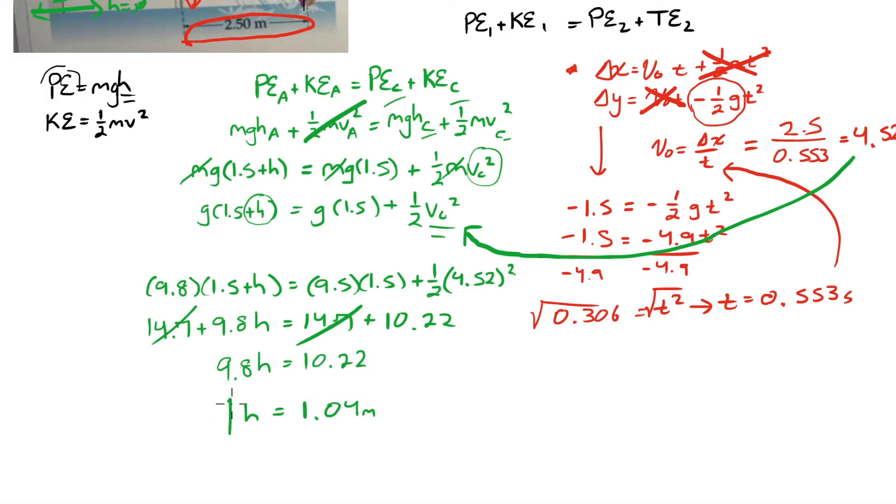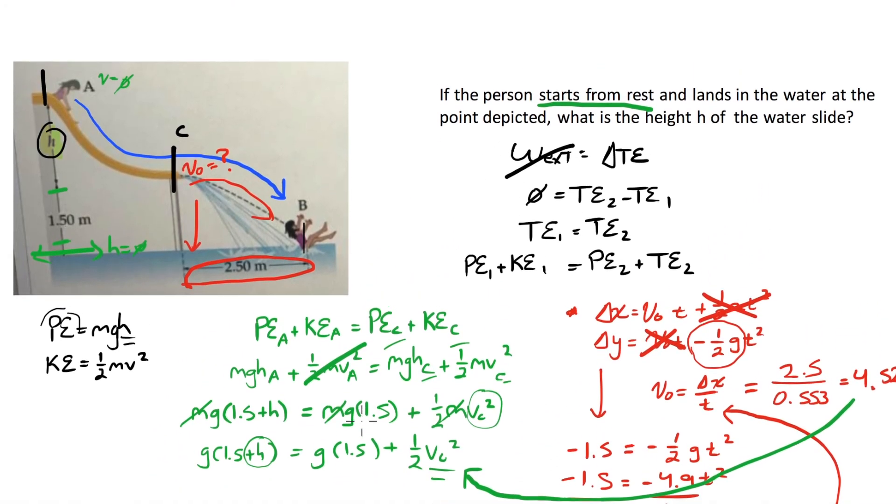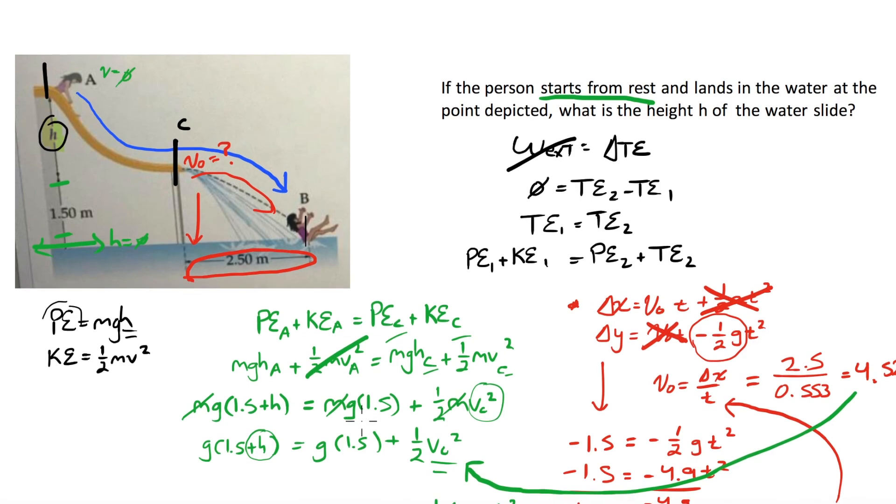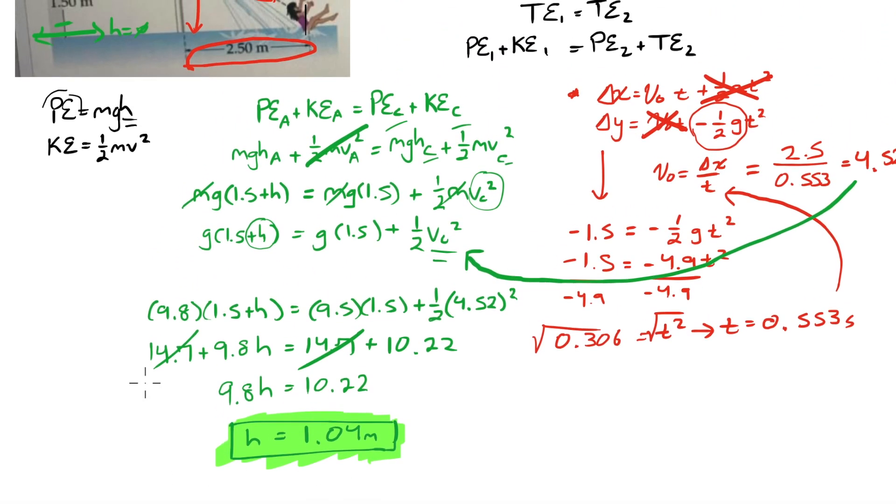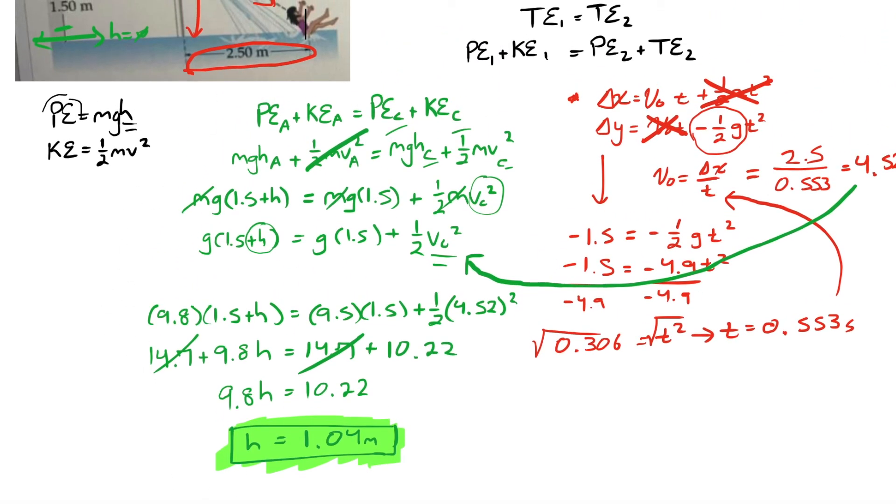Okay, so there it is. Height is going to be equal to approximately 1.04 meters. Let me see. Significant figures check says that, yeah, we'll probably keep all of those. So 1.04 meters, and we're going to be good to go. Thank you.